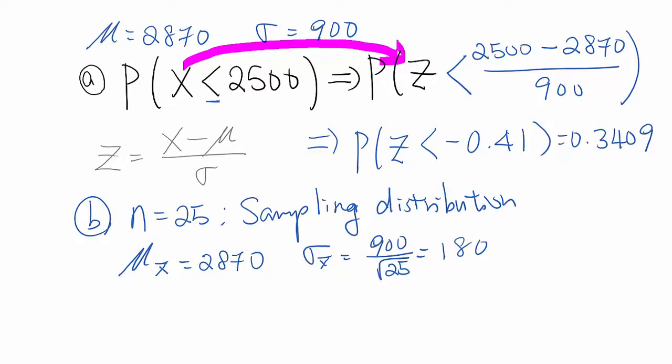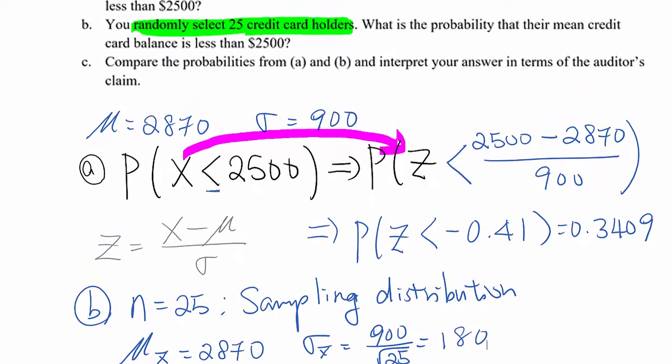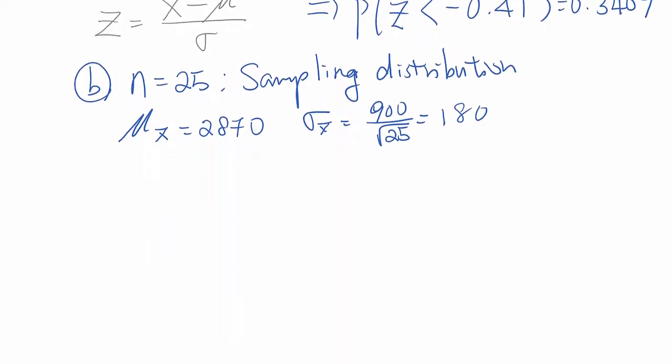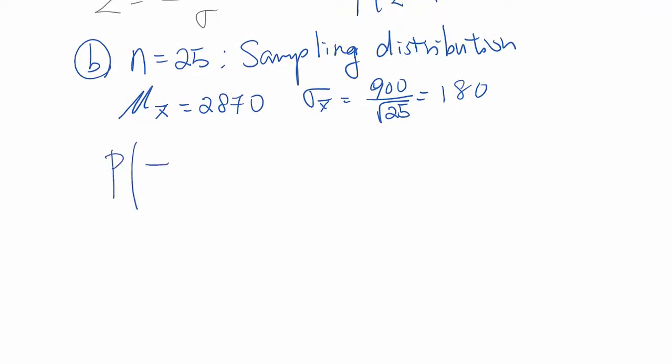So, let's go back to our question again. What is the probability their mean credit card balance is less than 2500? So, we just do same step. Probability x bar is less than 2500. The reason I indicate x bar because this is the sampling mean distribution. As I told you, we try to get sampling mean of the samples, right? So, it becomes probability x bar is z. So, z is less than 2500 minus 2870 over 180.